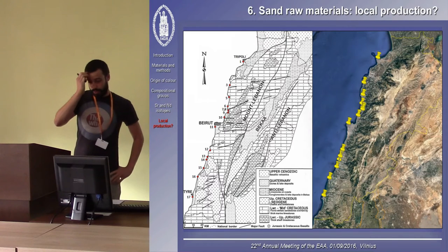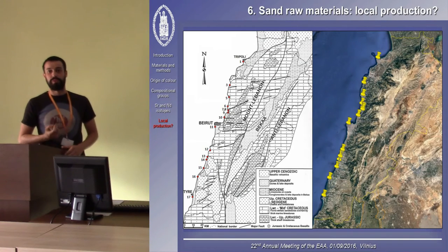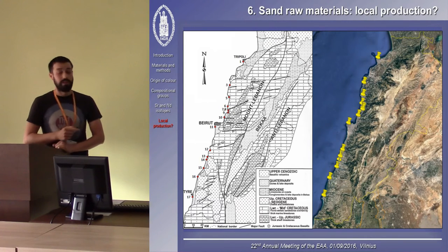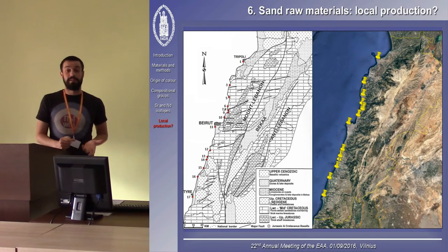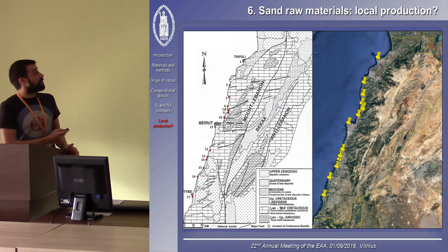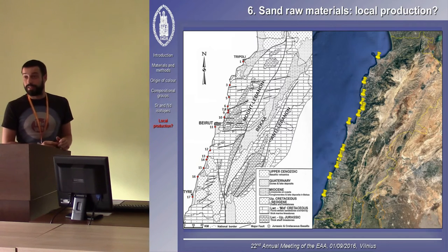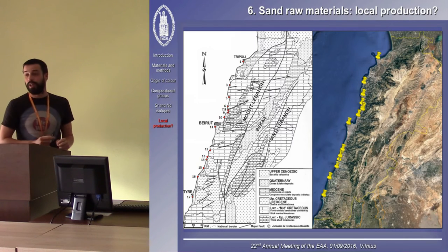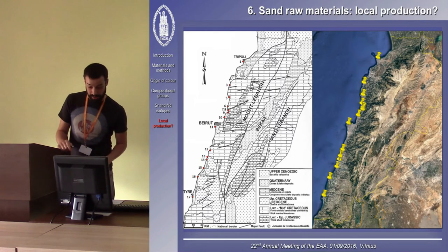Then we wanted to see whether these glasses could have been produced locally. All glass fragments came from Beirut, in Lebanon, and to see whether they could have been made locally or not, we wanted to compare them to locally available sand raw materials. To do that, we collected 39 sand samples from 17 beaches all along the coast of Lebanon. We analyzed them with optical emission spectroscopy to get their major elemental composition.